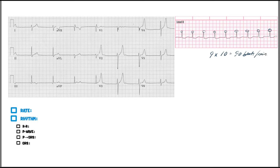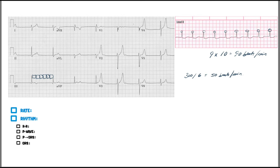Now let's look at this one down here using the box method. We'll look at lead three and go with this R wave — it's pretty close to the line. Marking the boxes: one, two, three, four, five, six — a tiny bit more than six boxes. Take 300 divided by six boxes, that's 50 beats per minute.